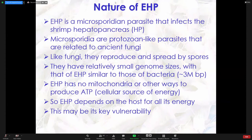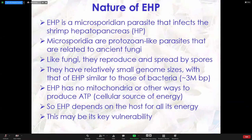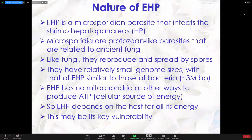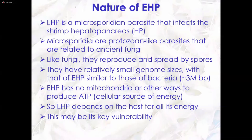They have relatively small genome sizes. For EHP, for example, it's around three megabase pairs, which is around the size of a bacterial genome — very small. One reason is it has no mitochondria or other ways to produce ATP, the main cellular source of energy. So EHP is completely dependent on its host for all its energy requirements, and that may be a key weakness we may be able to exploit in trying to control this parasite.